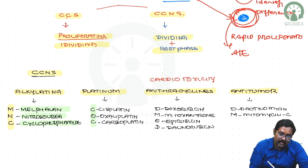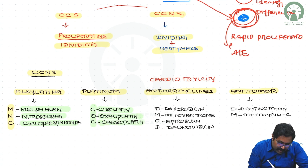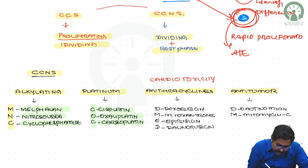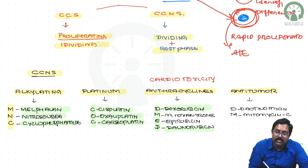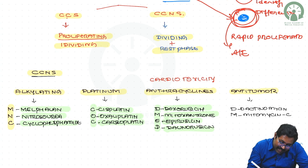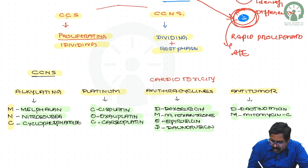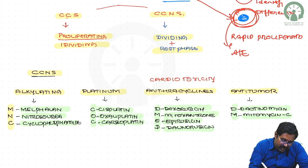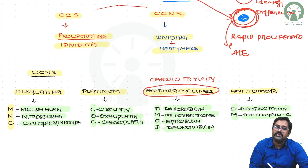Under anthracyclines, we have the mnemonic D-med: doxorubicin, daunorubicin, epirubicin, and mitoxantrone. Under anti-tumor drugs, we have DM: dactinomycin and mitomycin C. One important thing to remember is that anthracyclines have a propensity to cause cardiotoxicity — they carry the maximum risk of causing cardiotoxicity.